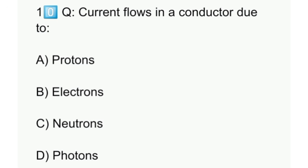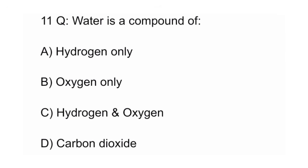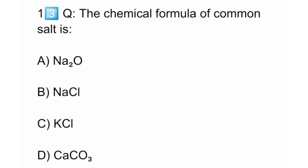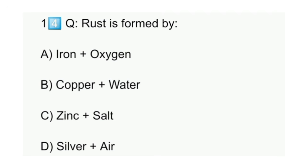Ten: Current flows in a conductor due to. Eleven: Water is a compound of. Twelve: pH value of pure water is. Thirteen: The chemical formula of common salt is. Fourteen: Rust is formed by.